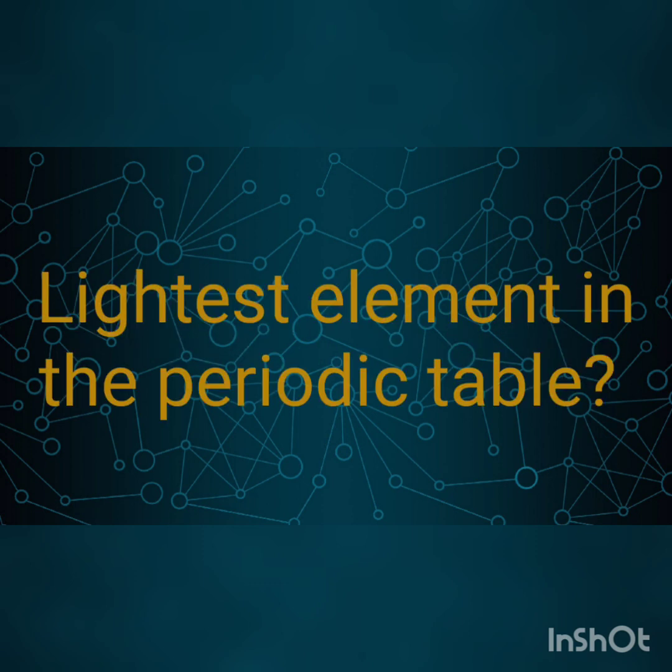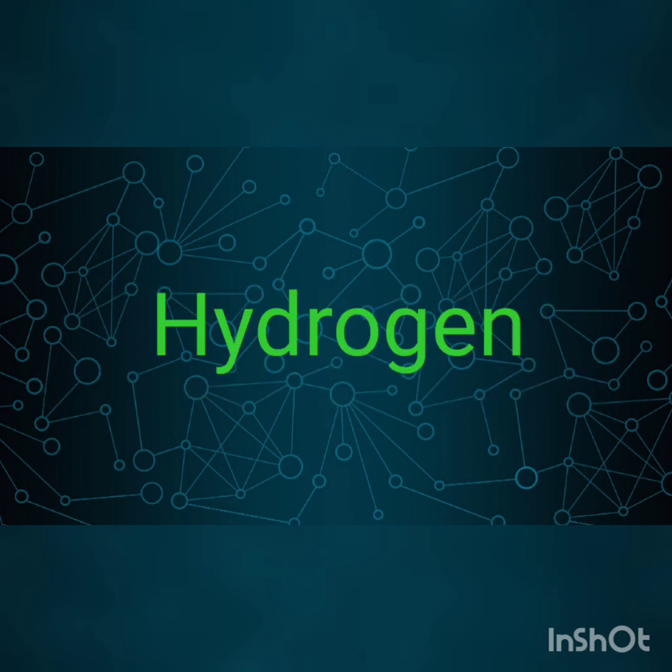Question number 8: Which is the lightest element in the periodic table? Hydrogen, having atomic number 1.